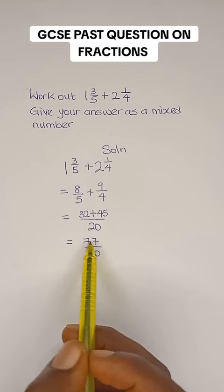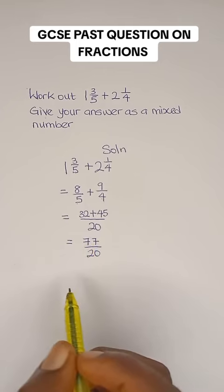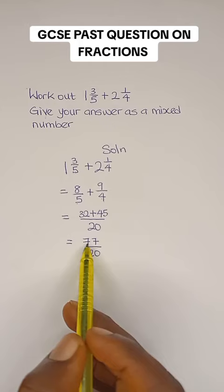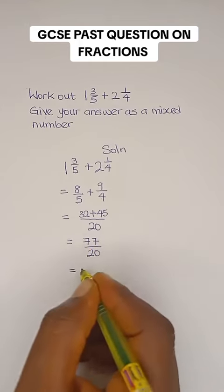So how many 20s do we have in 77? We have 3, because 20 multiplied by 3 is 60. 20 multiplied by 4 is 80, which is bigger than 77. So our whole number here is 3.